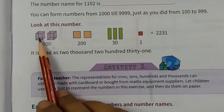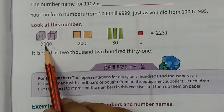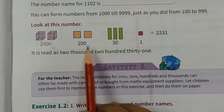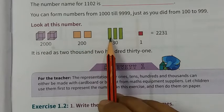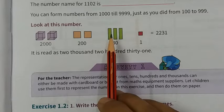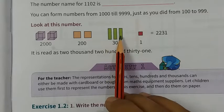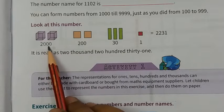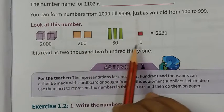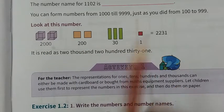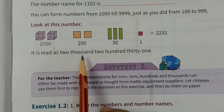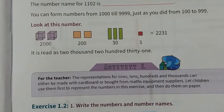Look here, 1 thousand, 2 thousand, so written here already 2000. 100, 200, 200. Before you saw this video, you will represent 10. 1 ten, 2 tens, 3 tens means 30. And 1, so 2230 plus 1 equals 2231. Its name, it is read as two thousand two hundred thirty one.